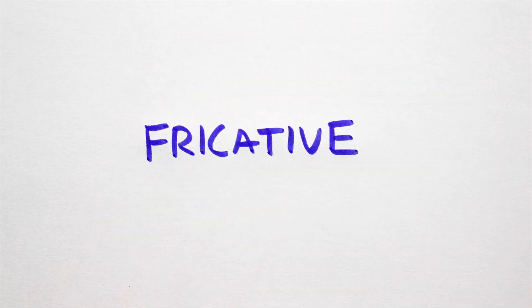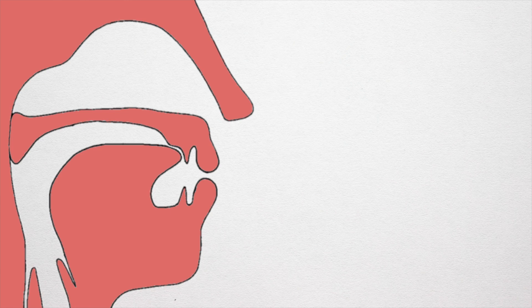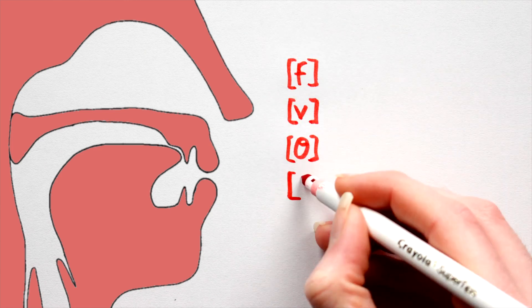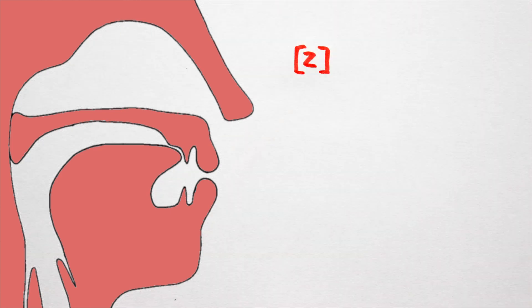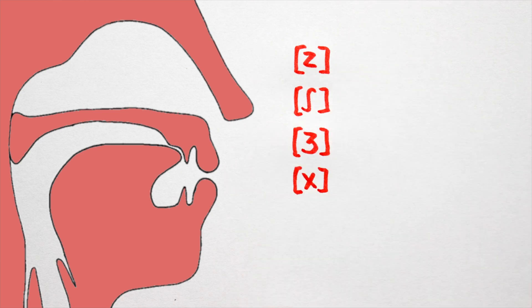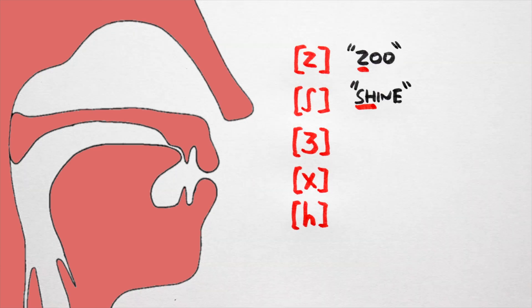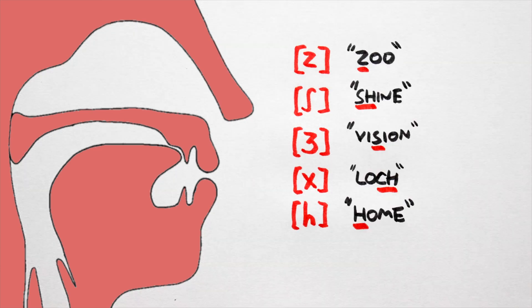Number 3: Fricatives. There are a lot of fricatives. Here the airflow is obstructed almost entirely, producing a turbulent hissing sound. In English, we have no less than 10 fricative sounds: 'fa', 'va', 'tha', 'tha', 'sa', 'za', 'sha', 'ja', 'ha', and 'ha', as in fish, van, thought, this, so, zoo, shine, vision, loch, and home.